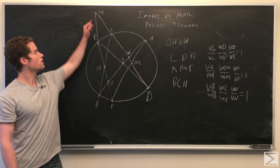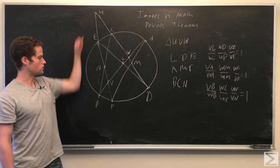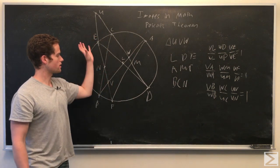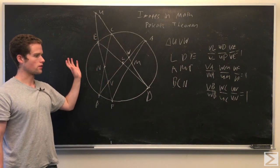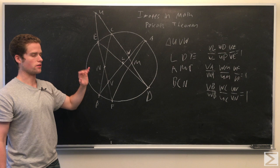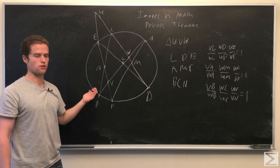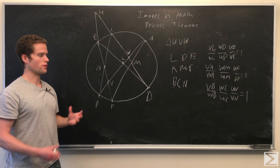Then we're going to use power of the point to do some cancellation. For example, we're going to have UE times UF on the numerator, and UC times UD on the denominator. And these are both equal by the power of the point.